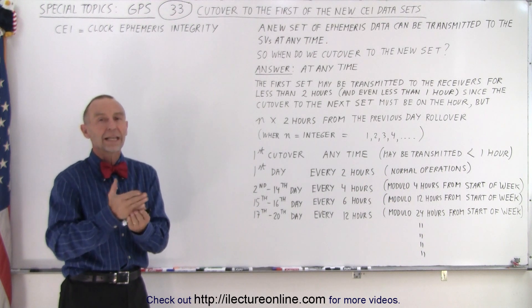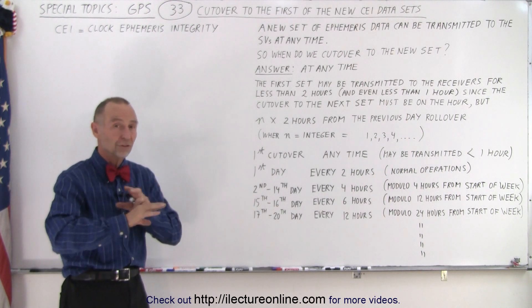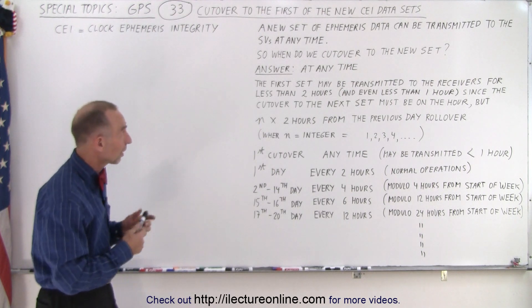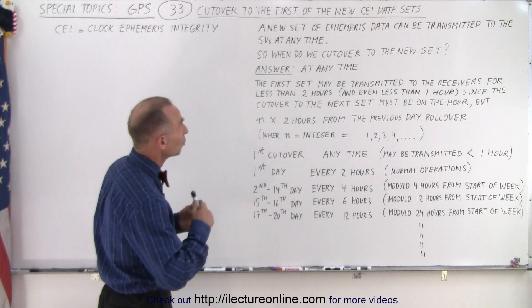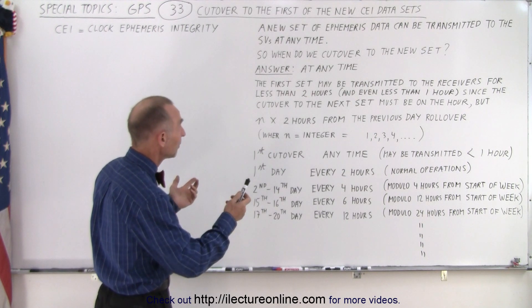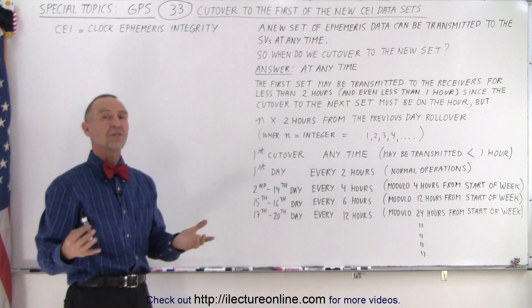Typically you want to send a new set of data on the hour, but that's not done for the first set. You want to cut over to the first set as soon as it's available. So notice, a new set of ephemeris data can be transmitted to the SVs at any time, and we cut over to the new set at any time, as soon as the data is available.